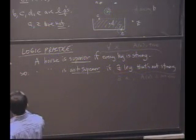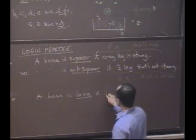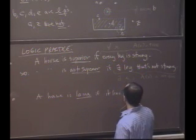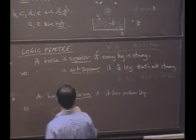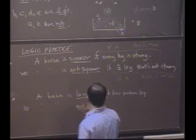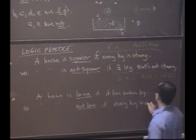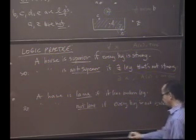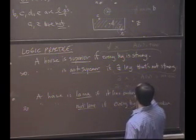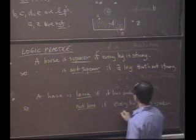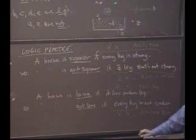So an example here might be a horse is lame if it has a broken leg. Right? Would you agree it just takes one broken leg to be lame? Yeah? Maybe? So it's not lame if what? If every leg is not broken. And once again, what I want you to see is this becomes, this is a there exists a leg X such that AX is true. It became a for all X, AX is not true.